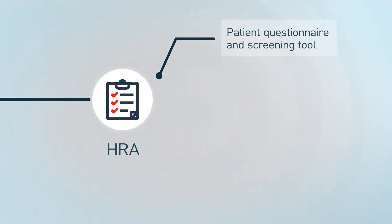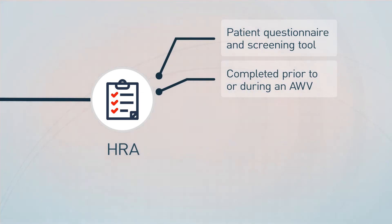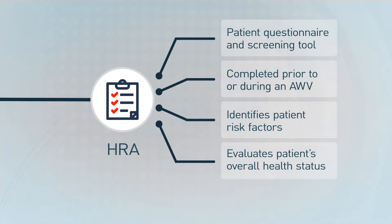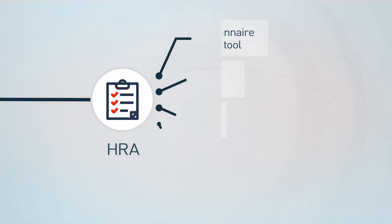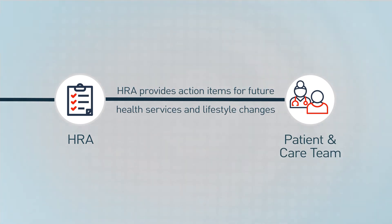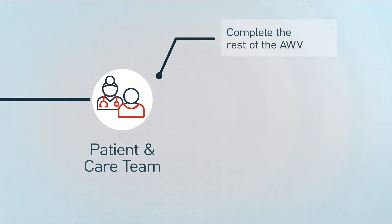An HRA is a questionnaire and screening tool for patients and a first step in identifying preventative measures. An HRA should be finished prior to or during an annual wellness visit. A patient may also take the assessment at home, either online or over the phone. As a preventative service, HRAs and AWVs help providers identify patient risk factors and evaluate the overall health status of the patient. Upon its completion, the health risk assessment will provide the patient and doctor with action items for future health services and lifestyle changes to accommodate any risky conditions.